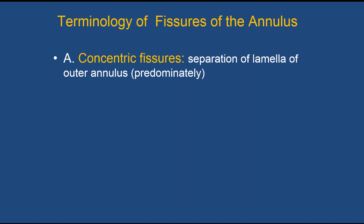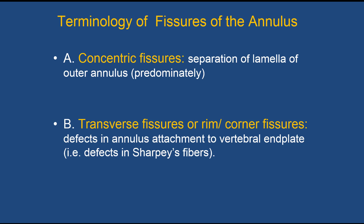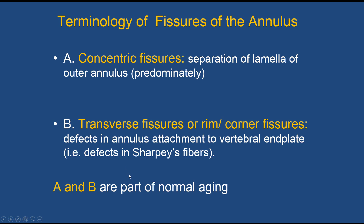Now we talk about fissures of the annulus. In the past they have been miscalled as tears, and we must eliminate that term from our dictations because tears imply something acute is going on. Usually fissures of the annulus are not acute but progressive, particularly radial fissures. There are three types: concentric fissures, which are separations of the lamellae of the outer annulus; transverse fissures or corner/rim fissures, which are defects in the annulus where it attaches to the vertebral end plate — defects in Sharpey's fibers. These two are seen as a normal part of aging.